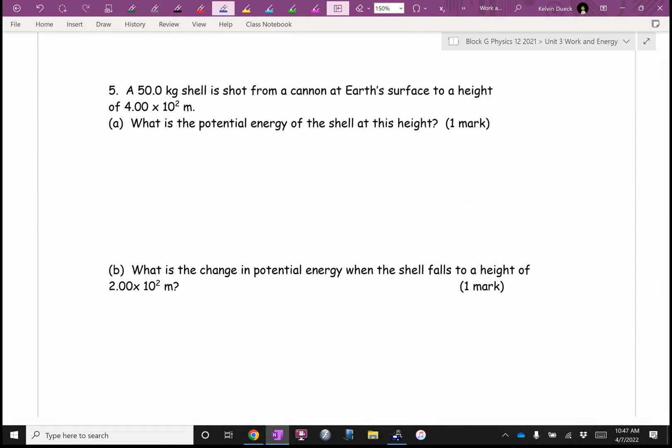Number five, what is the potential energy? Well, potential energy is going to be MGH. It's going to be 50 times 9.8 times 400. That's what 4 times 10 to the 2 is. Do that one in your head. Well, that's going to be 196,000. And that is joules of stored energy.